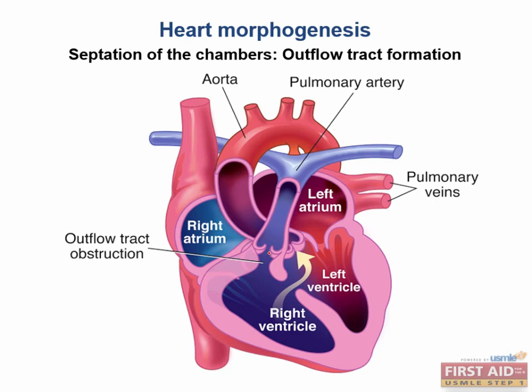Eventually this increased work by the right ventricle will lead to right ventricular hypertrophy, because the right ventricle chronically is pumping against the stenotic opening to the pulmonary circulation. The overriding aorta refers to the aortic outflow tract sitting directly over the VSD.